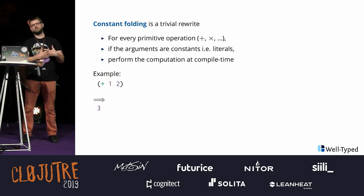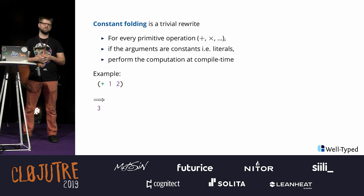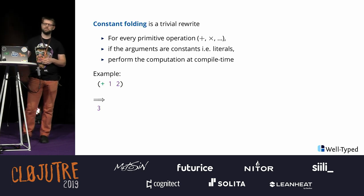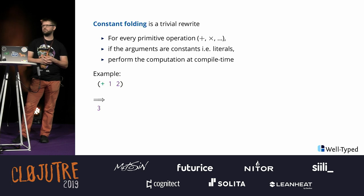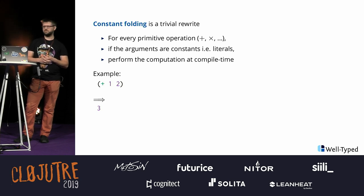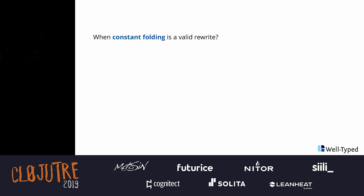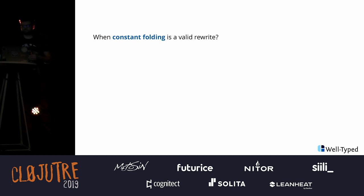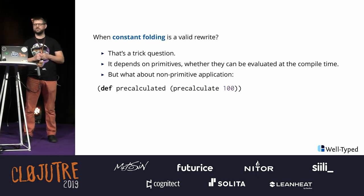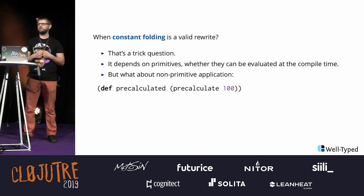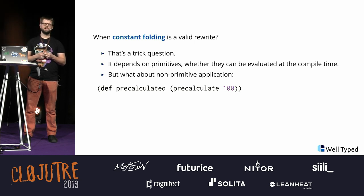The next optimization is constant folding — that's the one you probably all have in mind when thinking about optimization. If there's something you can evaluate, you evaluate it at compile time. So if we got stuck with plus 1, 2, we just evaluate it. This is very simple. But when is constant folding valid? It depends on your primitives in your language. In my language, all primitives can be evaluated at compile time. But if you have a primitive which prints something to the console, you probably want to do it at runtime, not at compile time. So it depends.